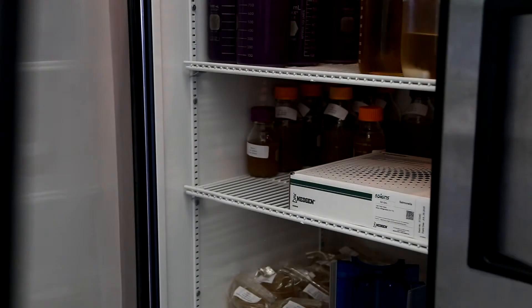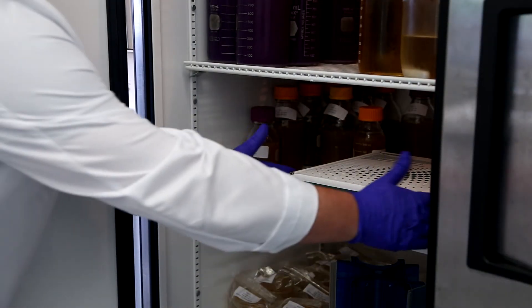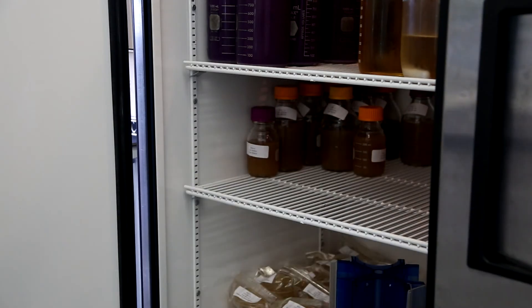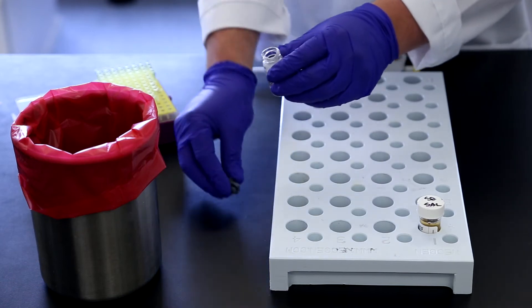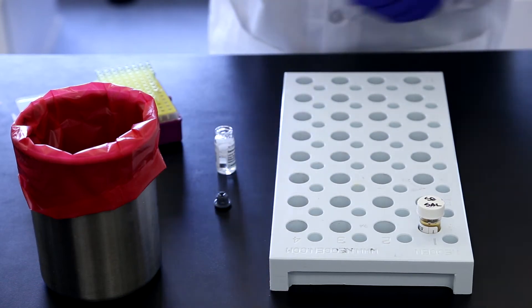For Salmonella, remove S2SAL vials from the refrigerator and allow to come to room temperature, about 30 minutes. Place vials being tested into the vial rack and supplement as necessary.